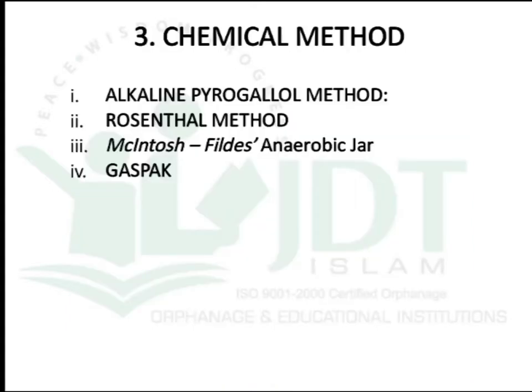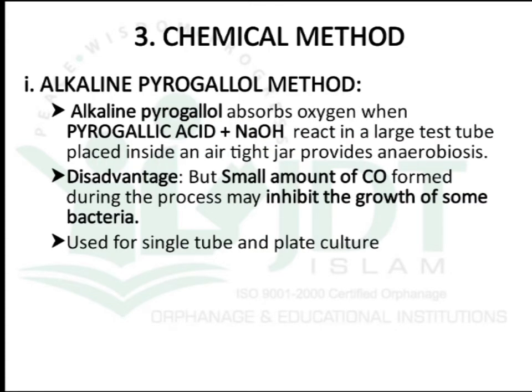The third method is the chemical method, where chemicals are used to remove oxygen. There are four sub-methods. The first is the alkaline pyrogallol method, which uses alkaline pyrogallol to absorb oxygen by reacting pyrogallic acid with sodium hydroxide in a large test tube placed inside an airtight jar to provide anaerobiosis. A small amount of carbon monoxide is formed during this process, which may inhibit the growth of some bacteria. This method is mainly used for single tube as well as plate culture.